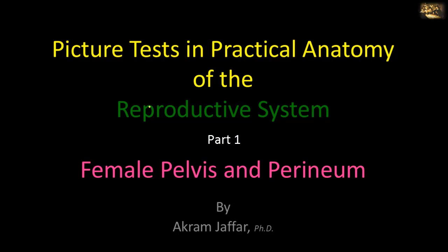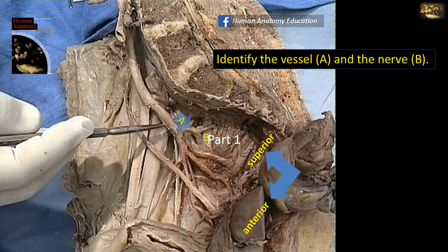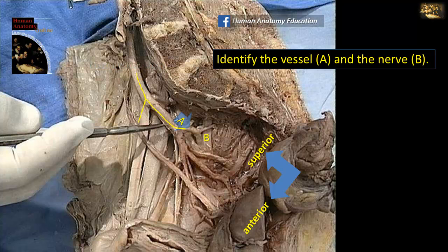Now I will deal with the gross anatomy of the female pelvis and perineum. Identify the vessel A and nerve B. This is a sagittal section of the pelvis; here is the posterior aspect to be oriented. This is the sacrum, and here you can see the common iliac artery dividing into external and internal iliac, with the posterior division and anterior division of the internal iliac artery. The posterior division continues down and leaves the pelvis above piriformis. Here is the piriformis muscle forming the bed for the sacral plexus, and so this artery is the superior gluteal artery.